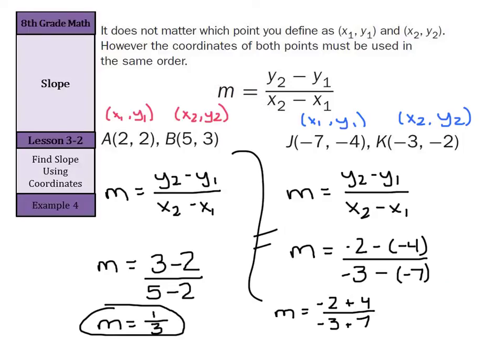So now, negative 2 plus 4 is 2, negative 3 plus 7 is 4. And just like our first question, we can simplify this one very similarly by dividing by 2 on top and bottom to get our final answer of 1 half.